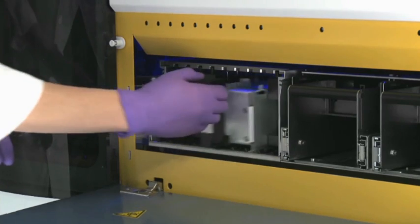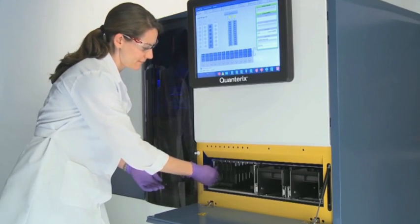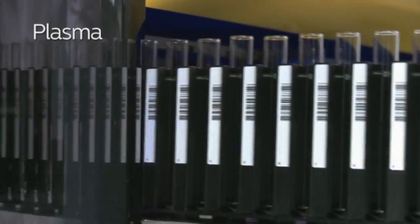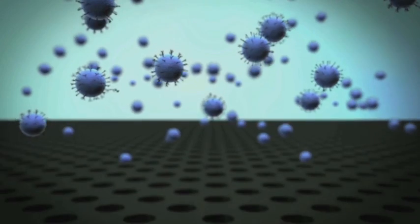Users load either 96 well plates or tubes containing their sample into the sample bay. Plasma, serum, CSF, cell lysate, or urine may be used.